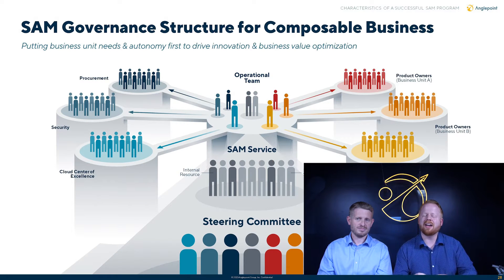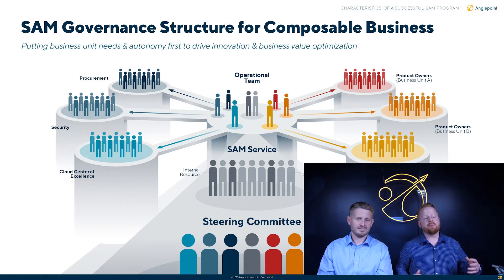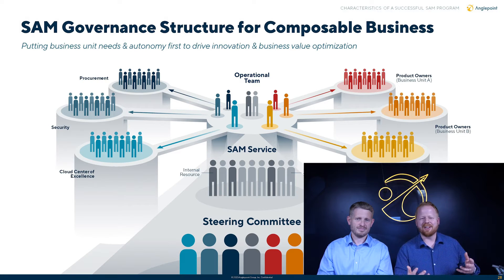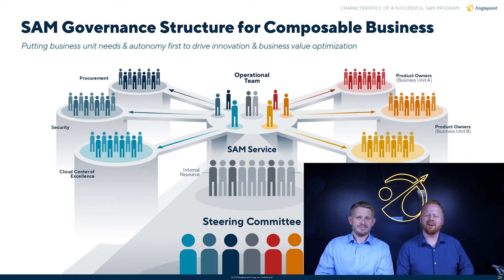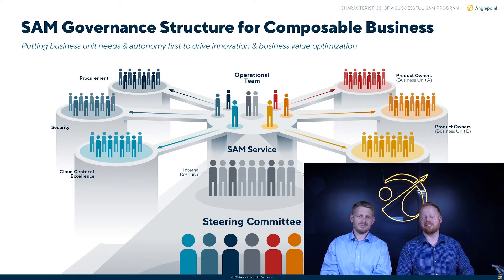Let's talk about the various stakeholders that a SAM function interacts with in an organization. This is an example, but there may be many others specific to your business. Largely and almost always, software asset management will interact with and have a good relationship with procurement — software procurement is an incredibly important input into an effective SAM program. Security is also a big one, in terms of end-of-life software, vulnerabilities, or compromised software — it's important that SAM and security be aligned.